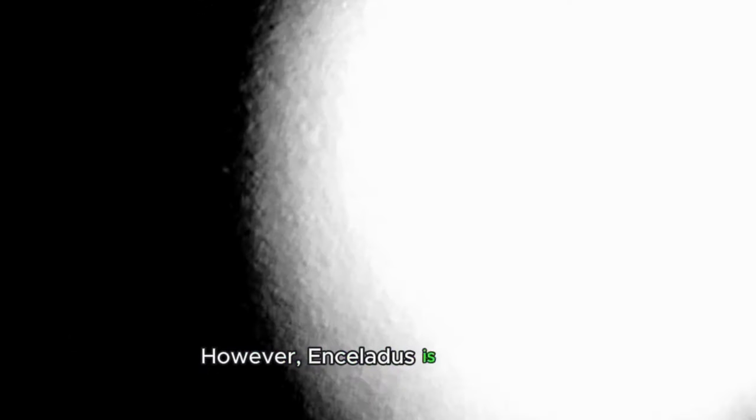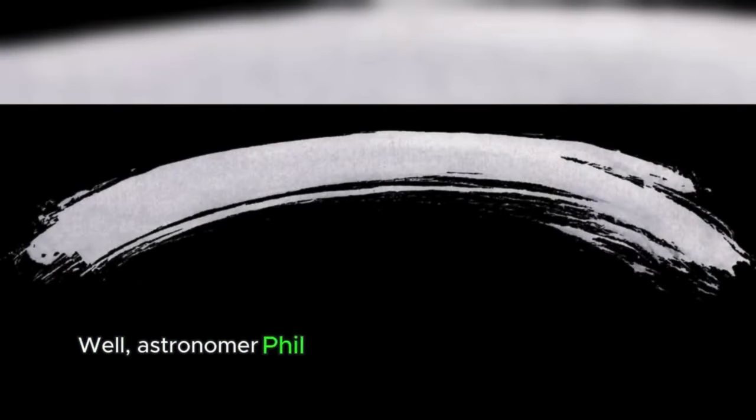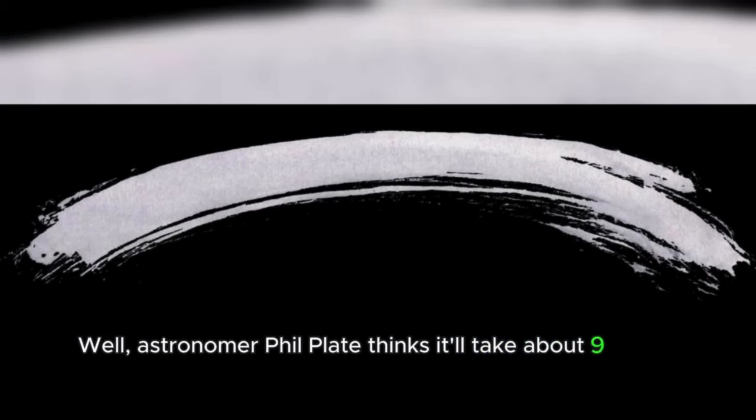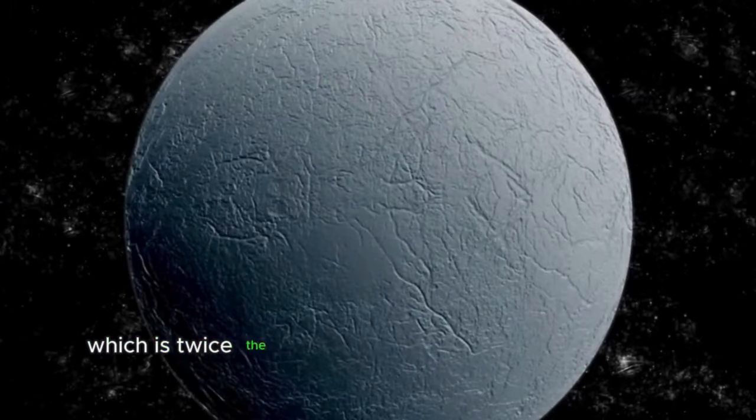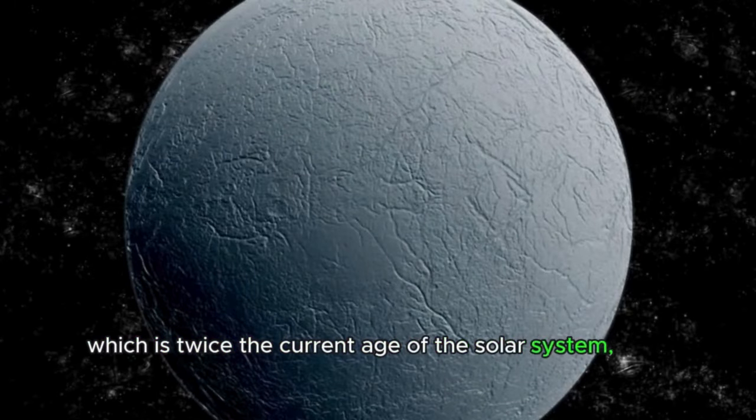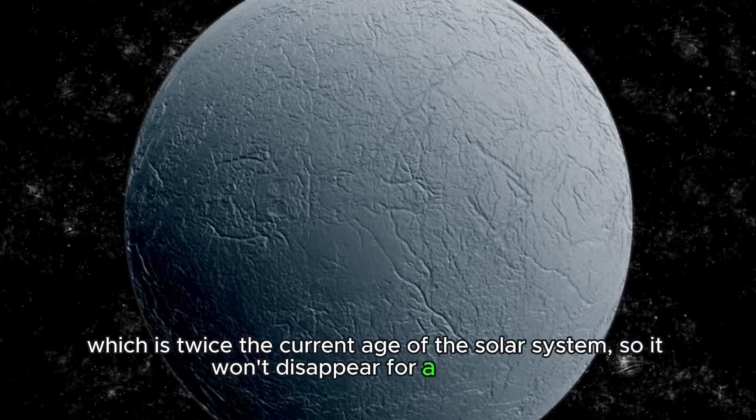However, Enceladus is very small. Shouldn't it be depleted at this rate of emissions? Well, astronomer Phil Plait thinks it'll take about 9 billion years, which is twice the current age of the solar system, so it won't disappear for a long time.